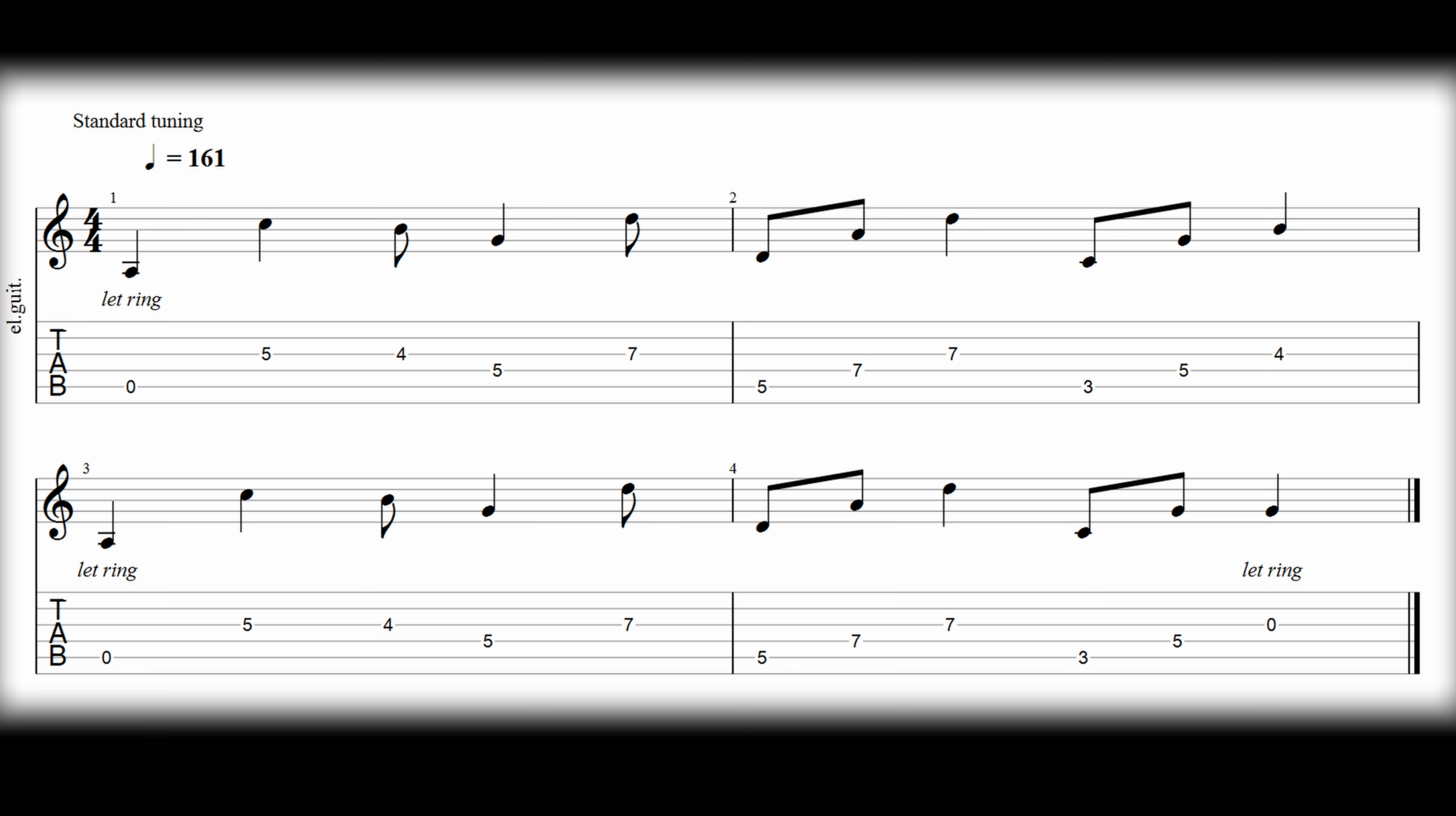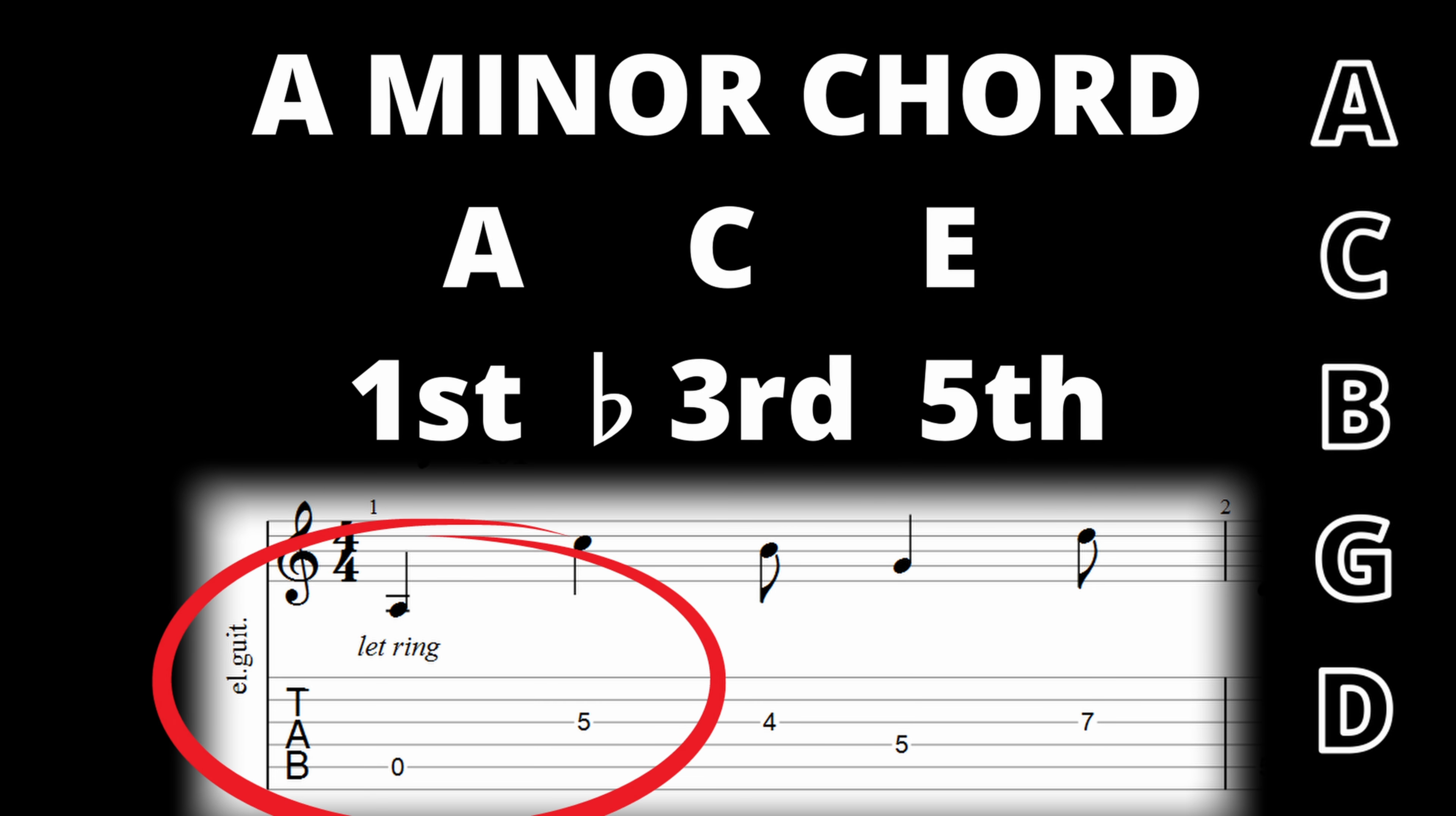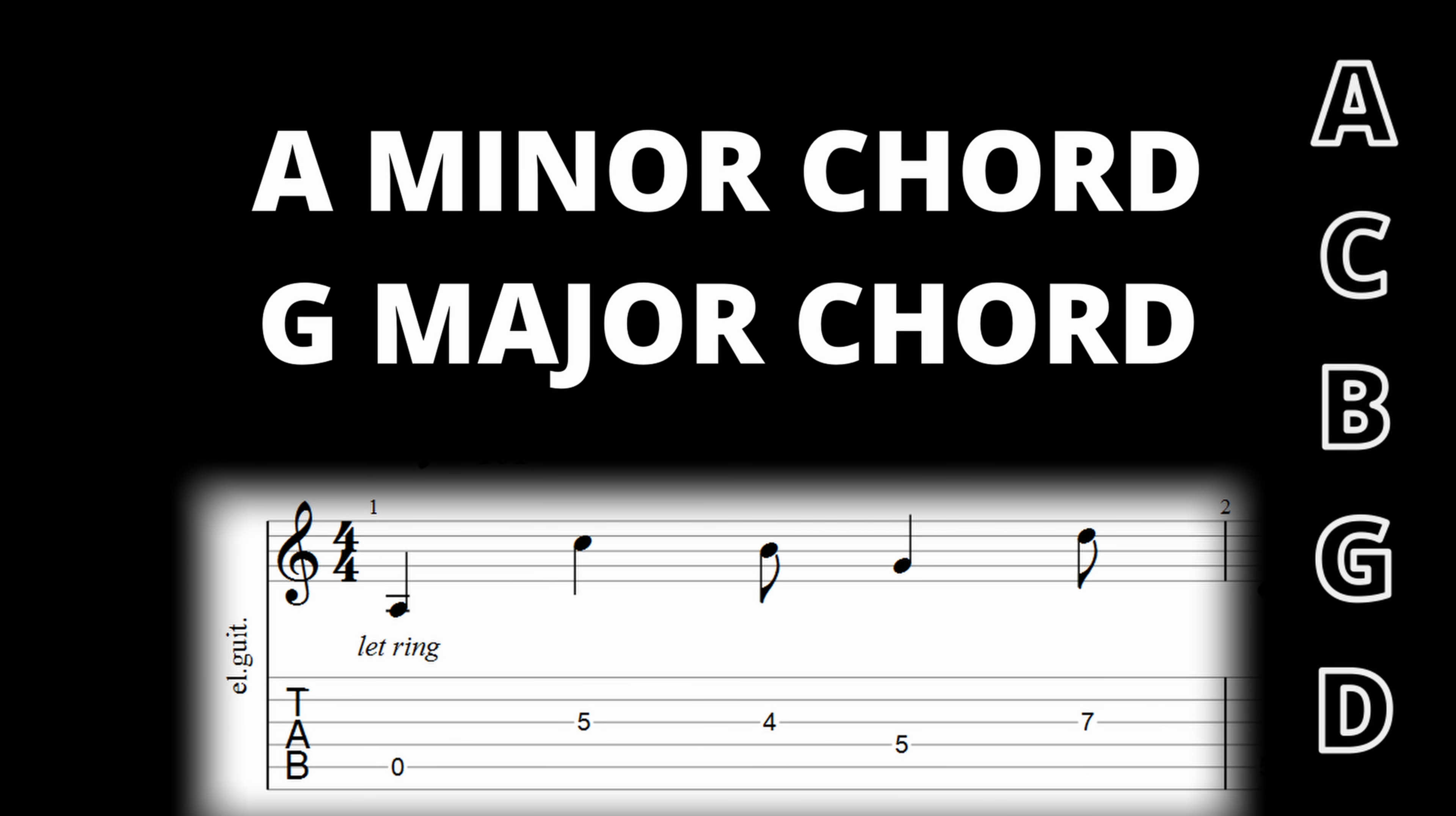The riff spans four bars and plays a total of four times. For the first two, it is played alone with some quiet organ in the background, then joined by bass and drums. The first bar uses the notes A, C, B, G, and D. The opening notes, A to C, create a minor third interval. These are the first and flat or minor third note in an A minor chord. As the initial A note is played open, it is left to ring out throughout the first bar.